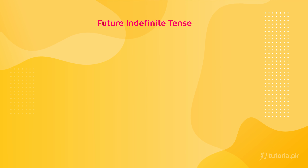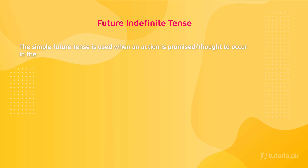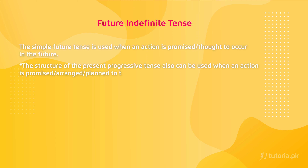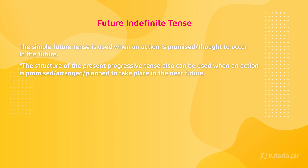Moving on to the next exercise on future indefinite tense. The simple future tense, also called future indefinite tense, is used when an action is promised or thought to occur in the future. You can also use the present progressive structure — 'is/am/are' plus verb-ing — when an action is arranged or planned to take place in the near future.